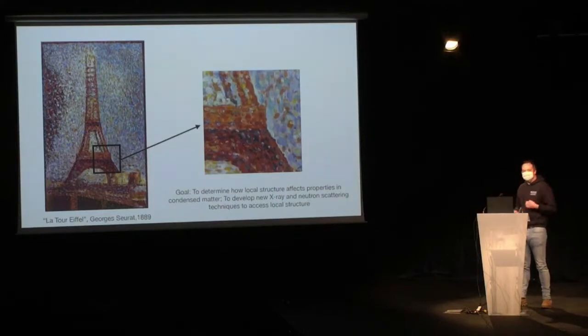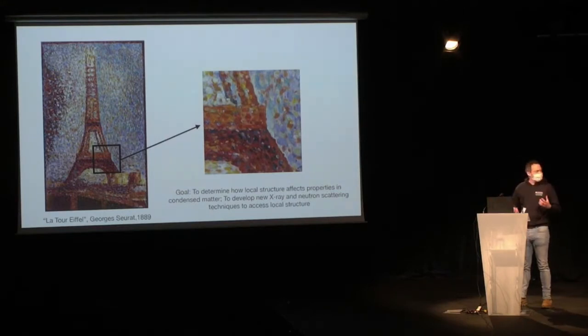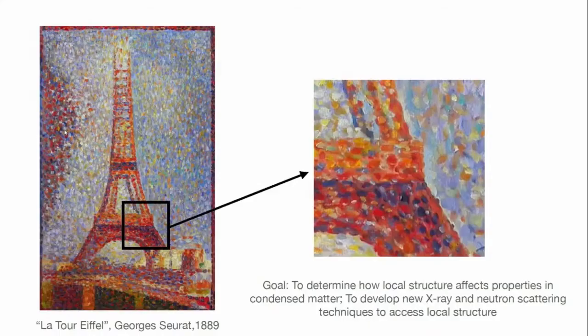This illustrates my research goal, which is to use X-ray, neutron scattering, and electron scattering to look at materials and examine the difference between their average structure that we see macroscopically — perhaps with X-ray diffraction — and their local structures. A secondary goal is to develop new techniques to access the local structure of functional materials.